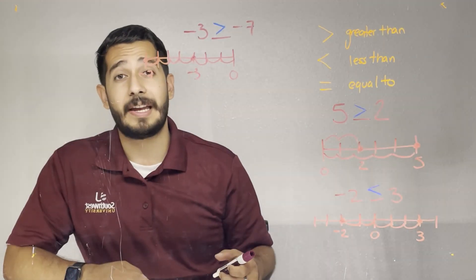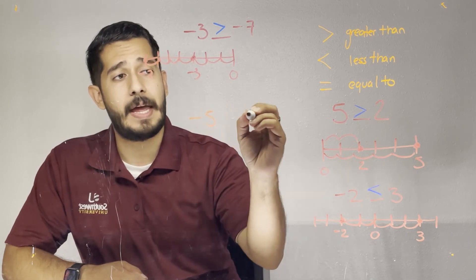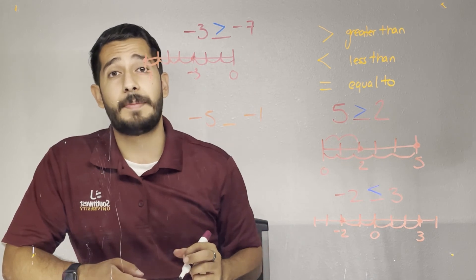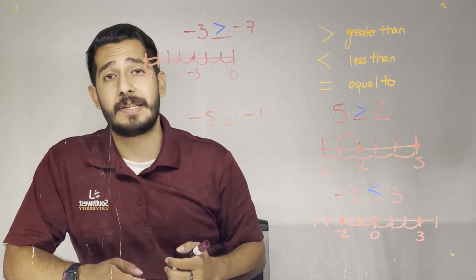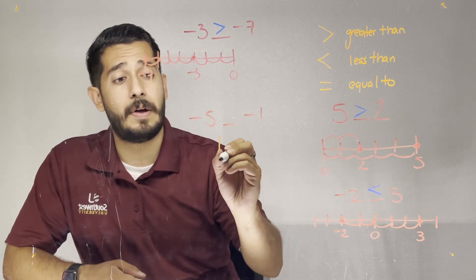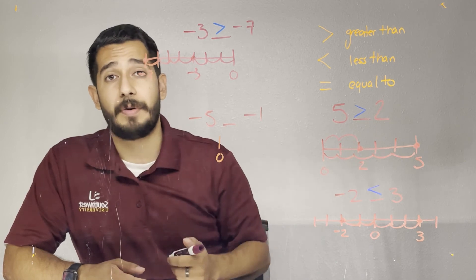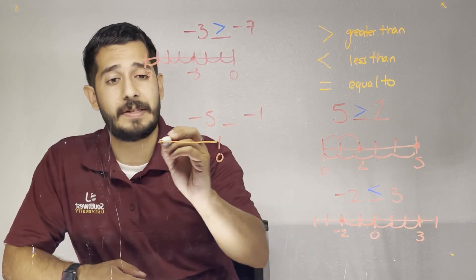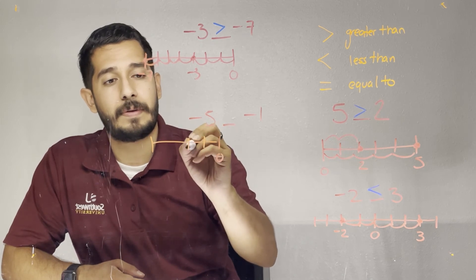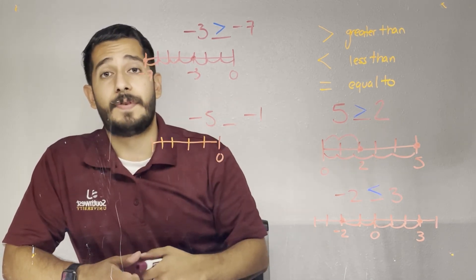Another example involving negative numbers is negative five and negative one. Let's go ahead and find out which of those two numbers is the greatest and place the correct symbol in between them. Let's start with my number line at zero, and I'm going to start drawing tick marks towards the left side since all I have are negative numbers.